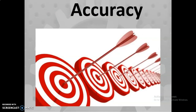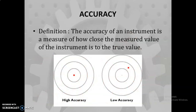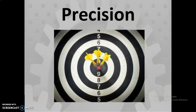Accuracy: from the figure, you can see an arrow striking the target point at the center. Accuracy of an instrument is a measure of how close the measured value is to the true value. If the arrow hits the target point, that is high accuracy; if not, it is low accuracy. Closeness to the true value is called accuracy.